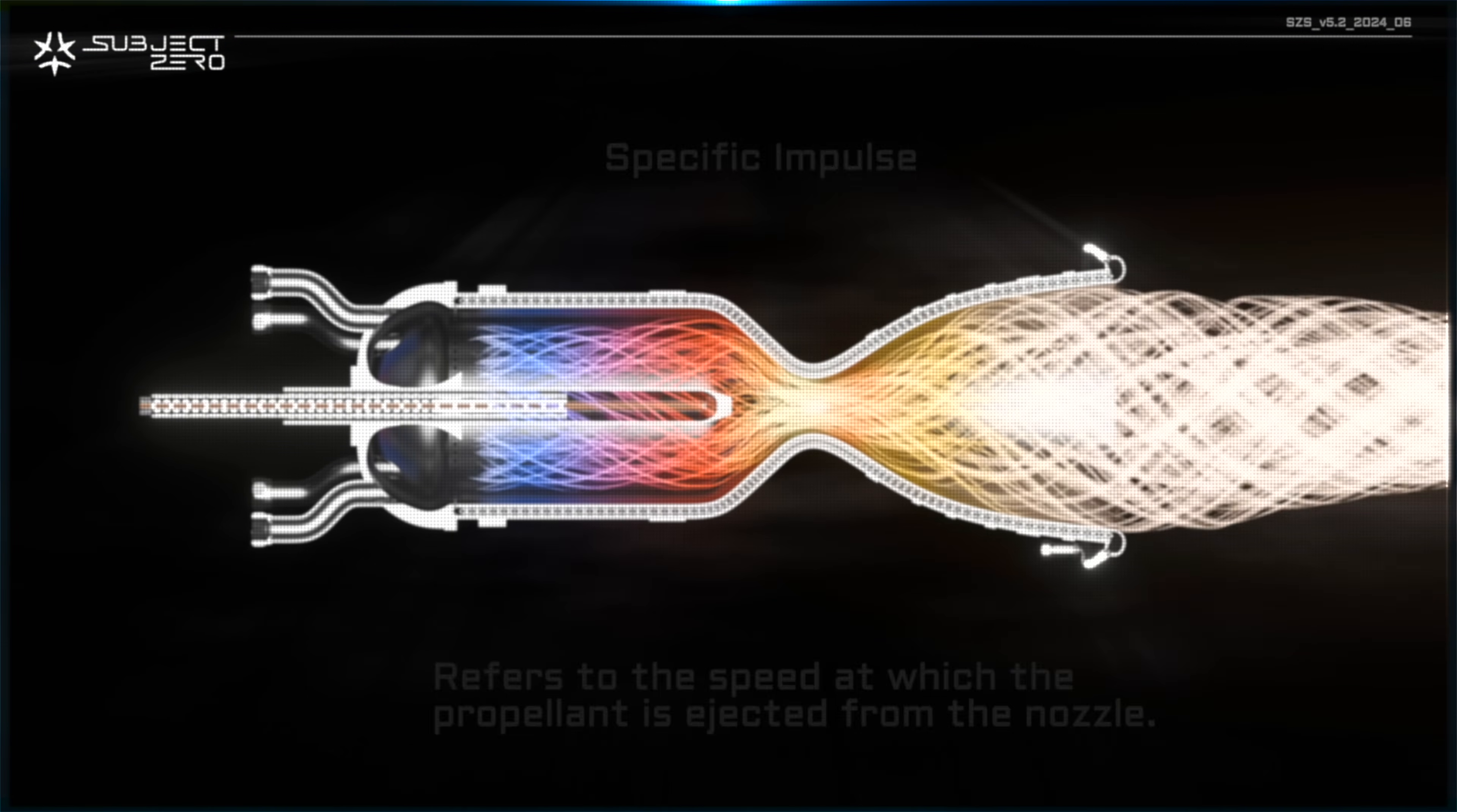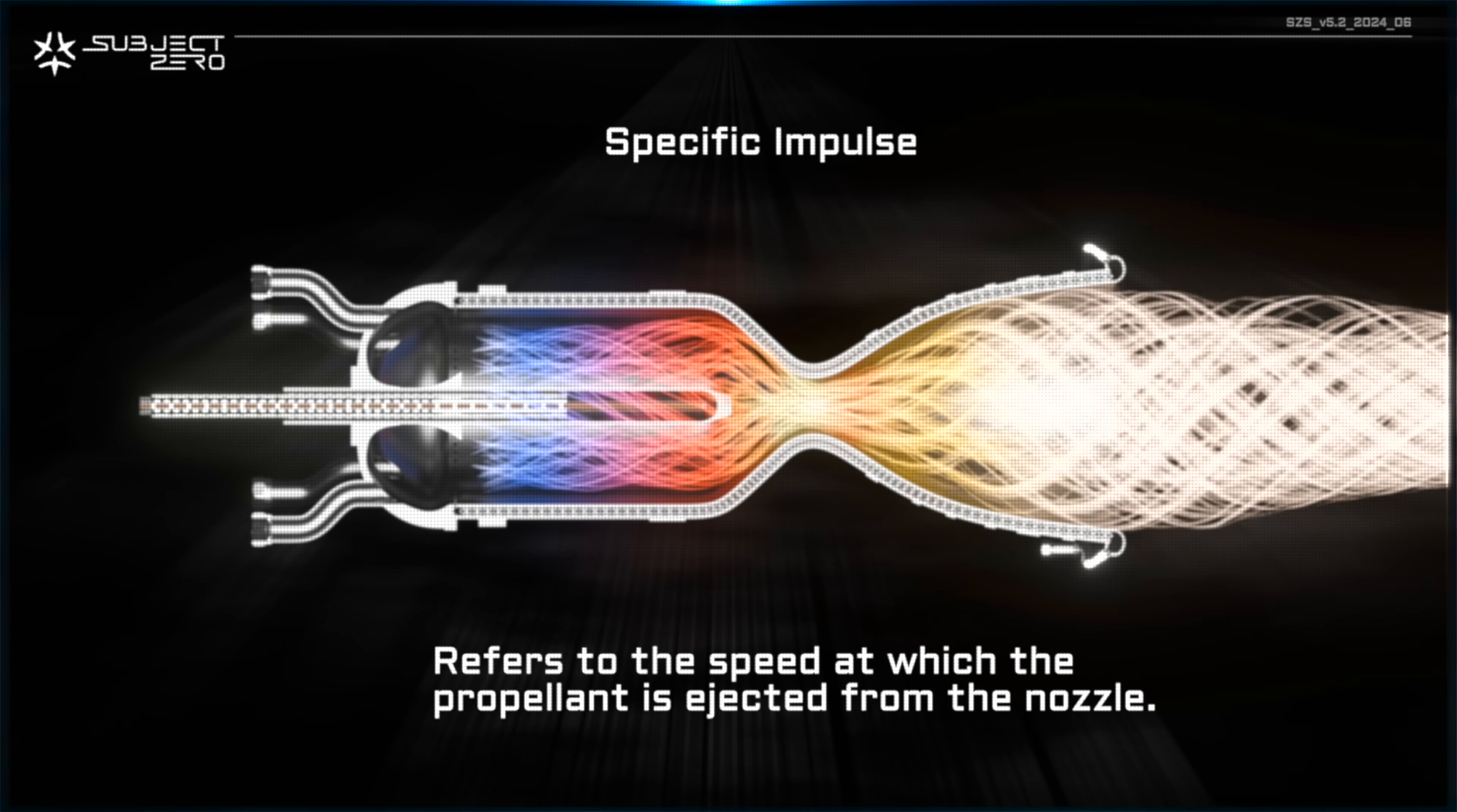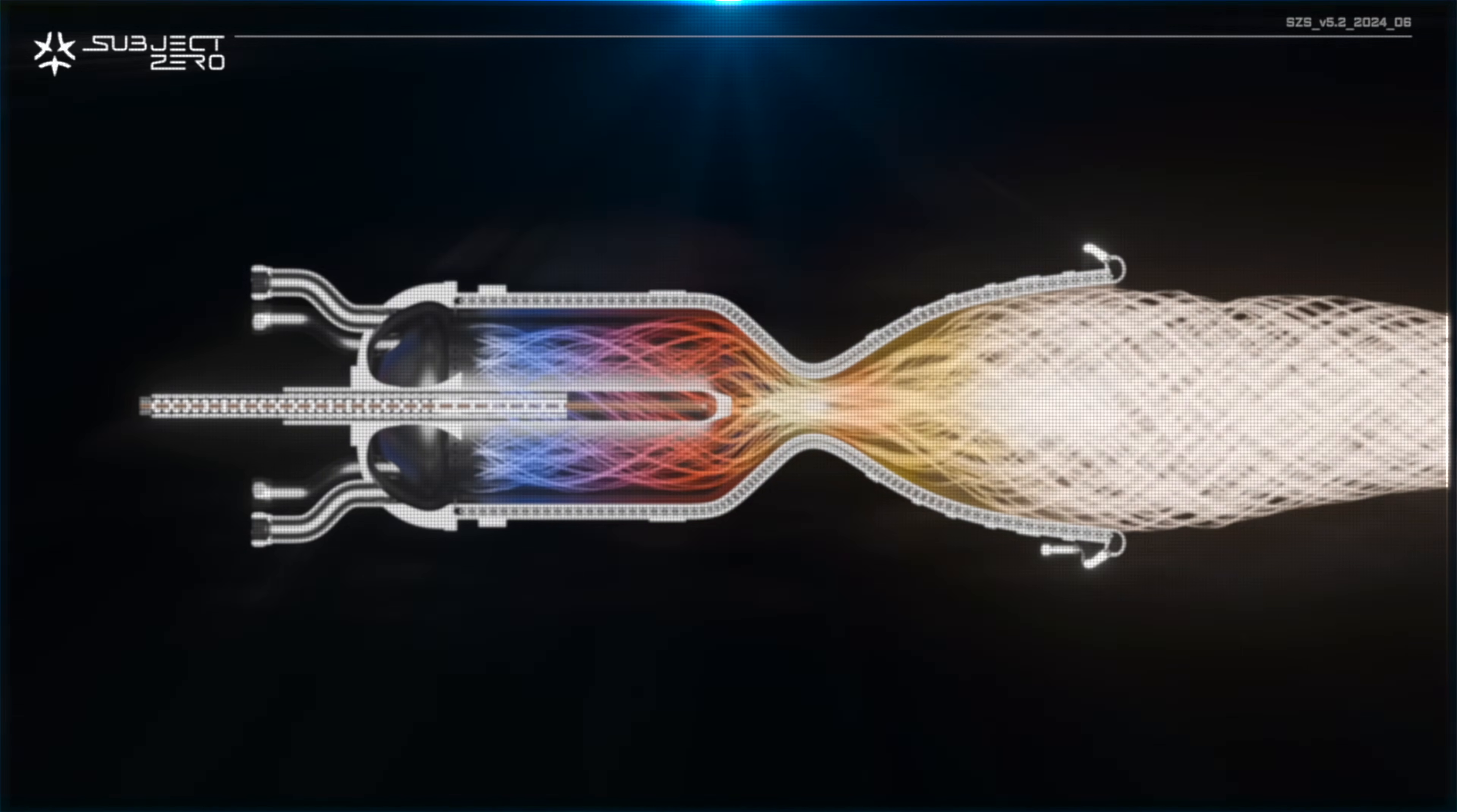Keep in mind that specific impulse is a measurement of an engine's efficiency that is directly related to the velocity to which a propellant is ejected from the rocket. In simple terms, the more energy you can transfer to a propellant, the faster it moves, the more force it exerts, with less fuel required to accelerate the ship.